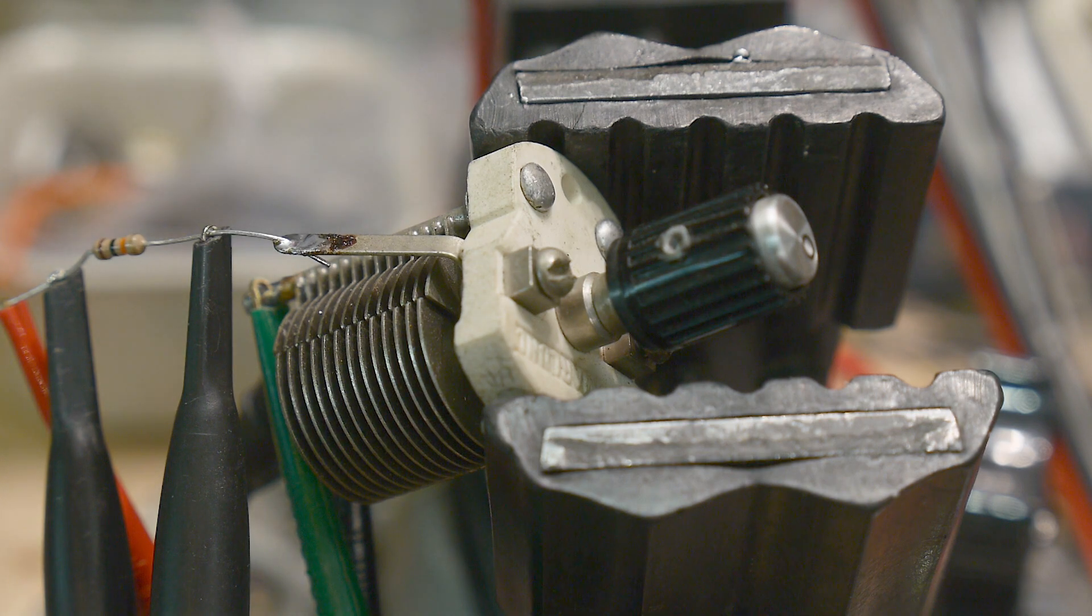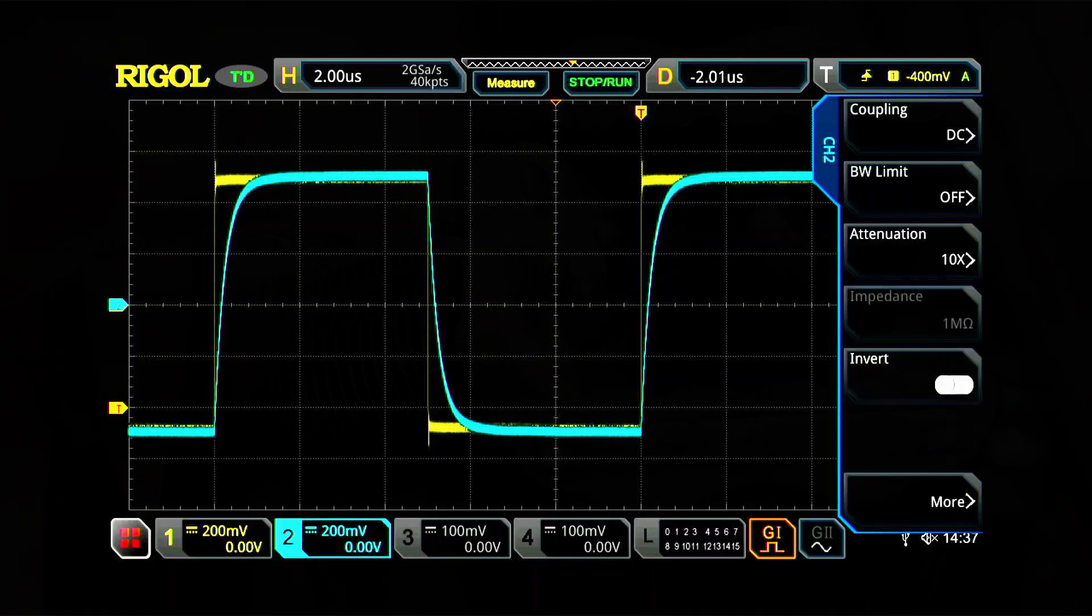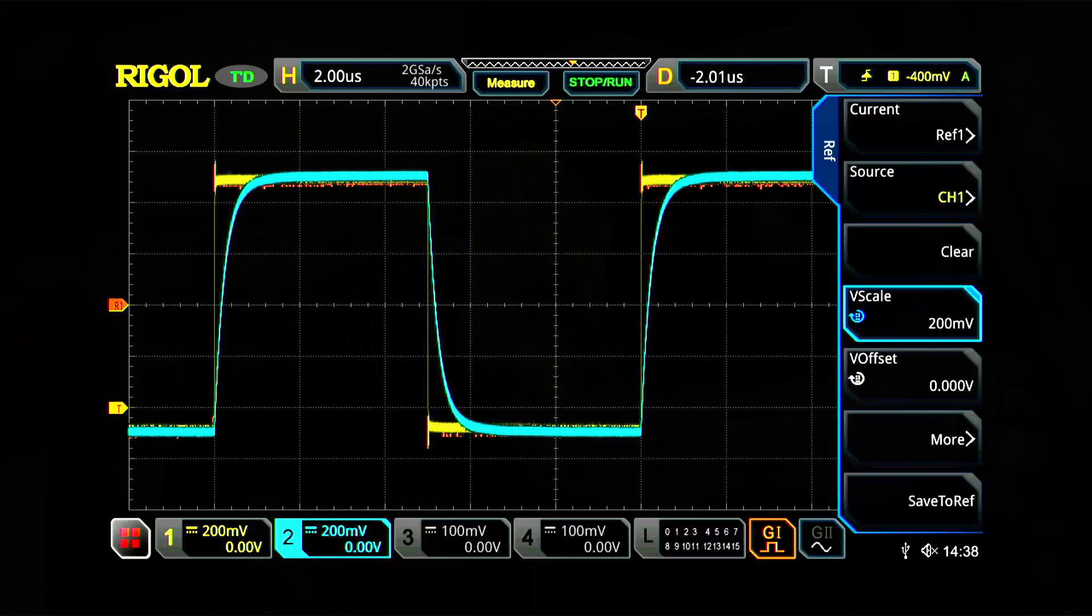Let's take a look at the oscilloscope. We have a square wave coming in, so that's the input. Let's turn on channel two and look at the output. Here's channel two. We can see there is a roll off, it's killing some high frequencies or modifying the edge of our square wave. On the oscilloscope, this is the minimum capacitance in our circuit. Let's do a ref and save to ref.